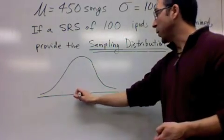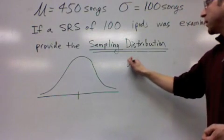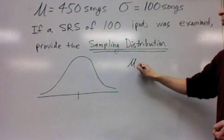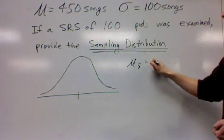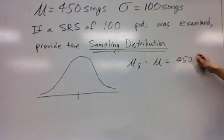We'll know that it's perfectly normal, we'll know where the center is too. The formula that's given on the exam is that the sampling distribution's average is equal to the true average, which in this case is given, 450 songs.